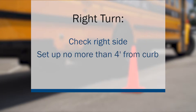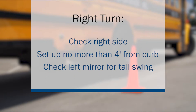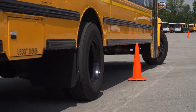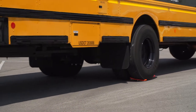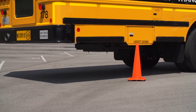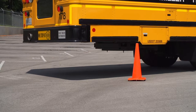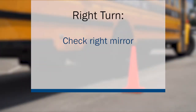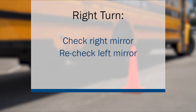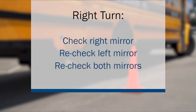Set up your turn no more than four feet from the curb. Look at your left mirrors briefly to ensure that your left tail swing has adequate clearance from vehicles, objects, and pedestrians. During the turn, it is necessary to ensure your rear axle has enough clearance to keep your bus from pinching objects on your right once the bus begins the pivot. Check your right flat and convex mirrors for space as your bus continues through the turn. Recheck your left mirrors for clearance in the event a vehicle or person has entered the area where your tail swing will occur. Once you have completed the right turn, check your mirrors once again and straighten out your front wheels before accelerating ahead.